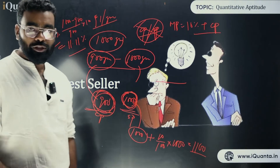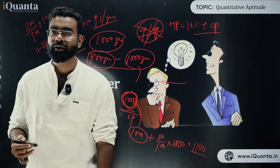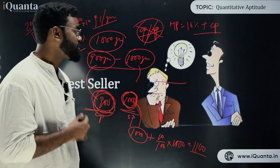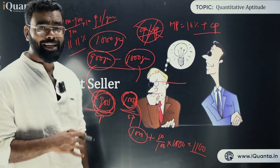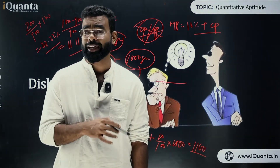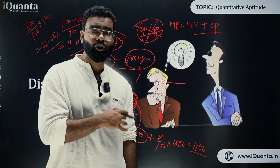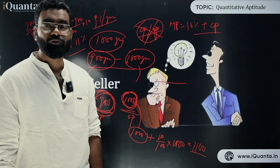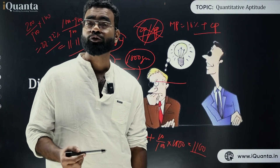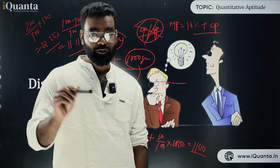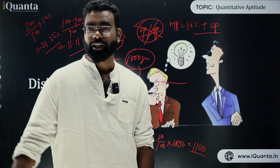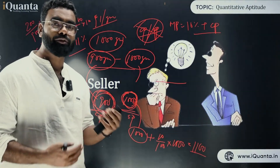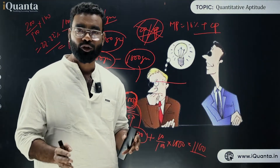This is how we generally deal with questions based on the selling price and weight balance — dishonest selling type questions. We can also use successive percentages to solve this type of question, which we will see in some other videos. I hope you have understood the concept. Next, we will start discussing some questions based on this concept.